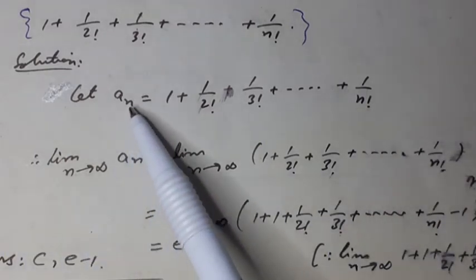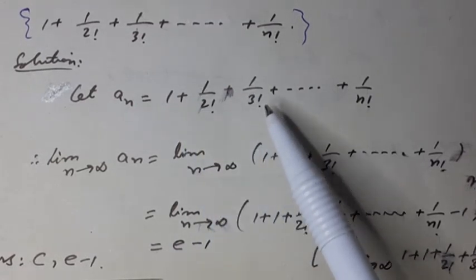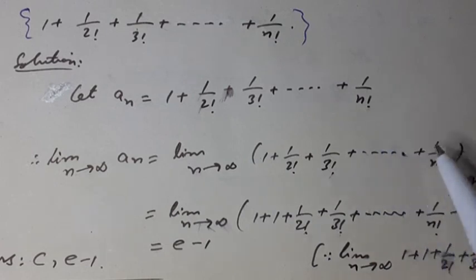Therefore, limit n tends to infinity an equals limit n tends to infinity 1 plus 1 over 2 factorial plus 1 over 3 factorial plus so on plus 1 over n factorial.